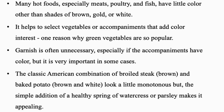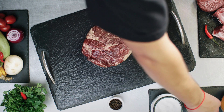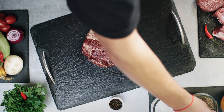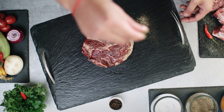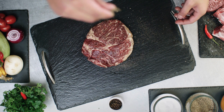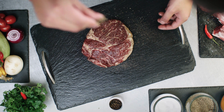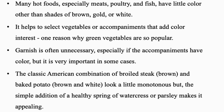This is one reason why green vegetables are so popular. Garnish is often unnecessary, especially if the accompaniments already have color, but it is very important in some cases. The classic American combination of broiled steak and baked potato looks monotonous, but the simple addition of a sprig of watercress or parsley makes it appealing.